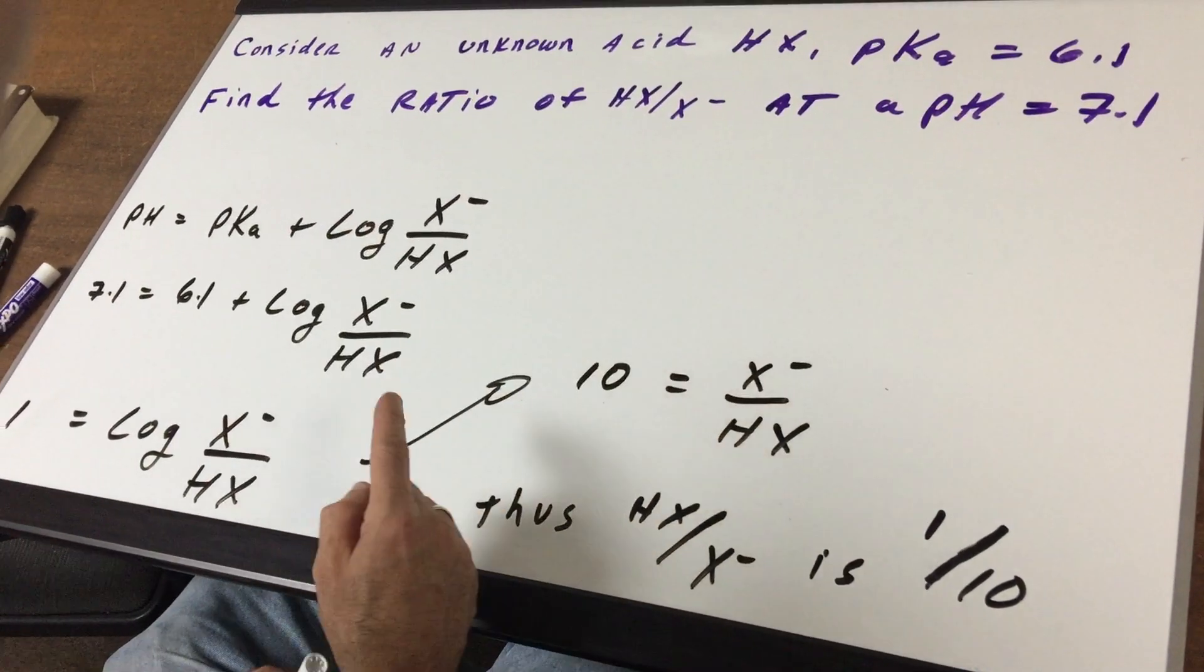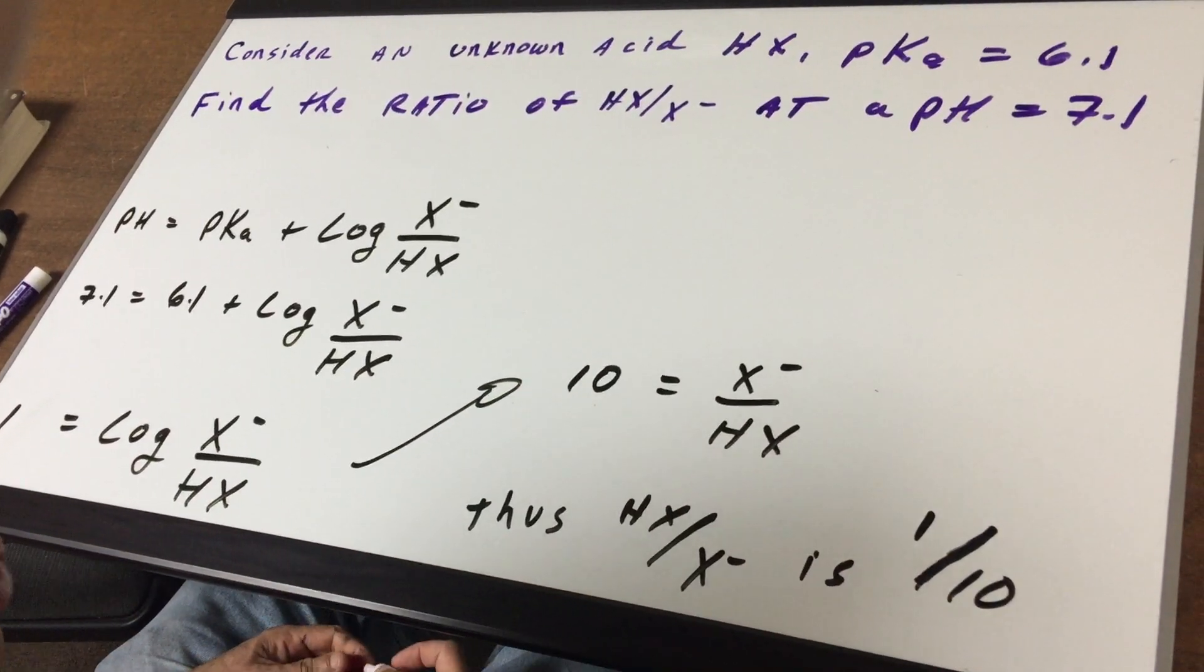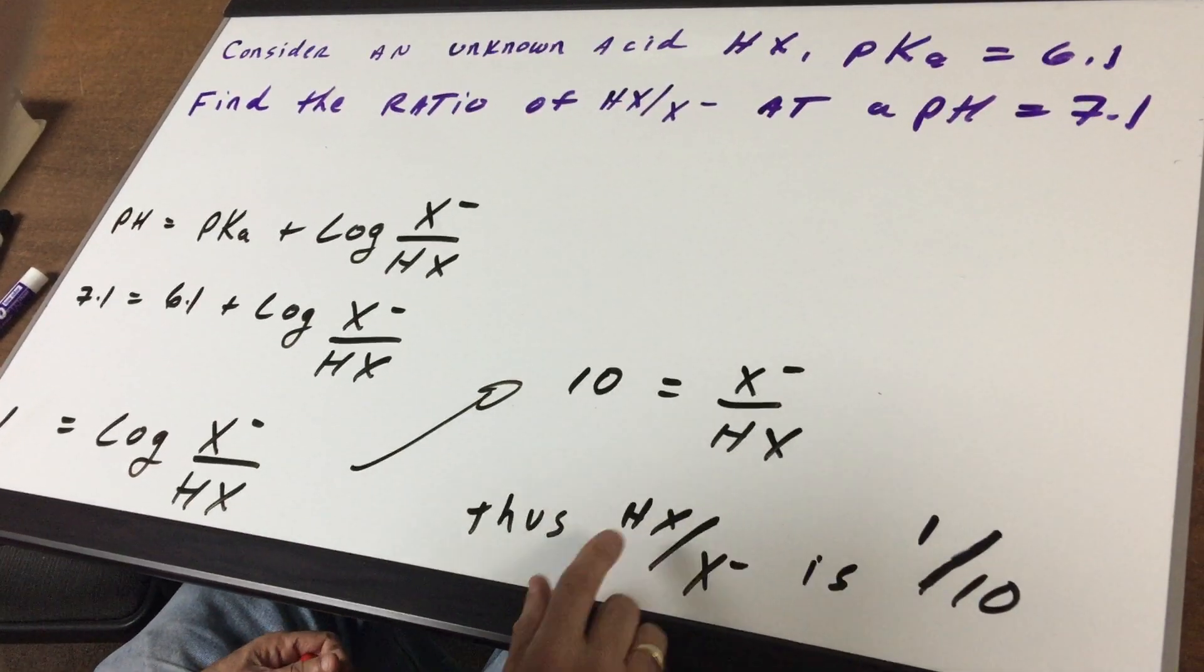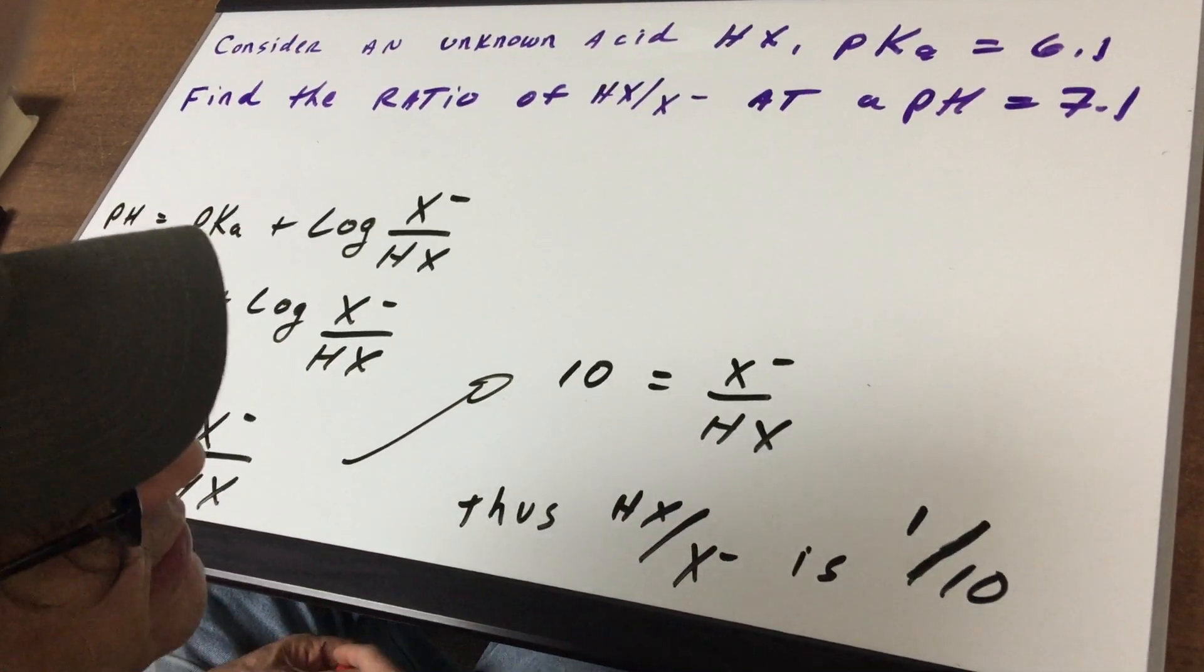So therefore the ratio of acid to salt would be the reciprocal of this, which is 1 over 10. So that means we're going to have 1 part acid and 10 parts as its conjugate.